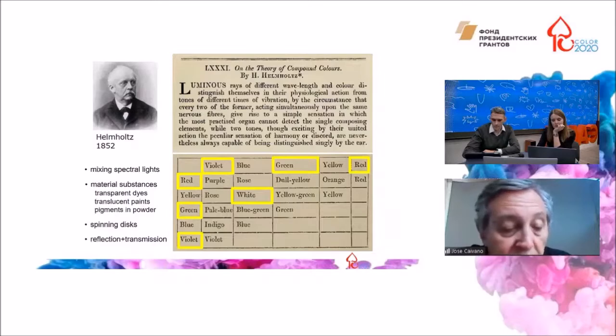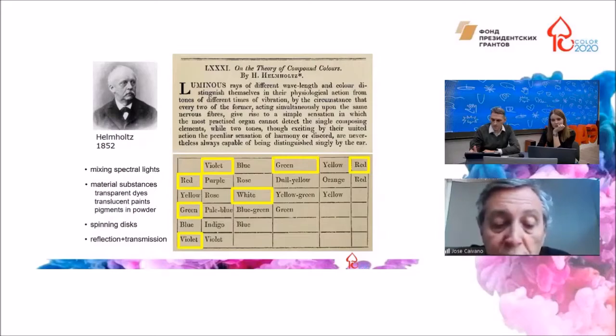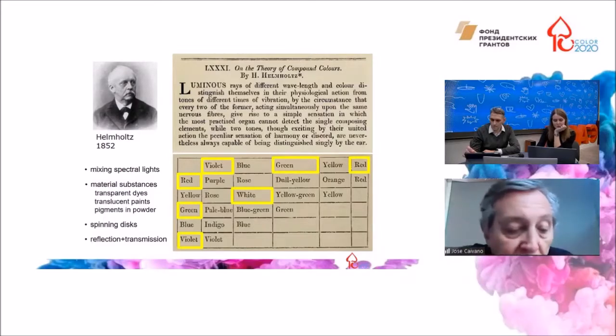Then he reports what happens with material substances, either transparent dyes, more translucent paints, and pigments in powder form. Finally, he mentions the spinning disks with radial sectors of colored papers, and also an arrangement with a glass and two different colored papers, one that is seen by reflection and the other by transmission.